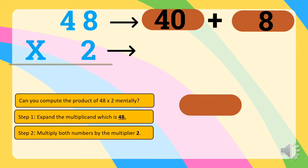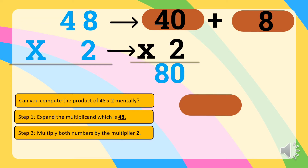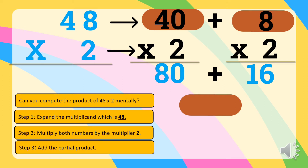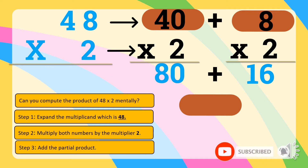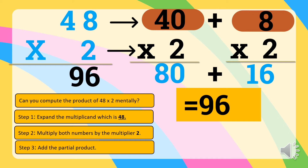Step two is to multiply both numbers by the multiplier, 2. So 40 times 2 is equal to 80. 8 times 2 is equal to 16. Step three is to add the partial products. The partial products are 80 and 16. So let's add: 80 plus 16 is equal to 96. Therefore, 48 multiplied by 2 is equal to 96.